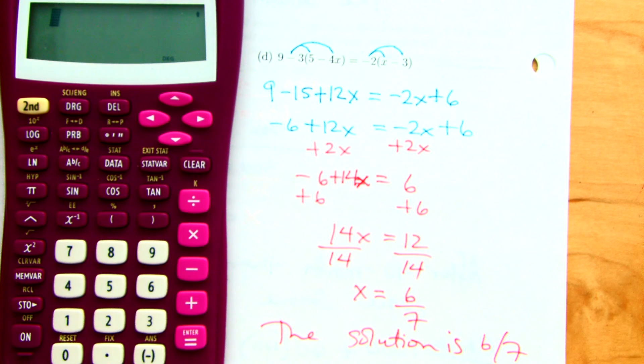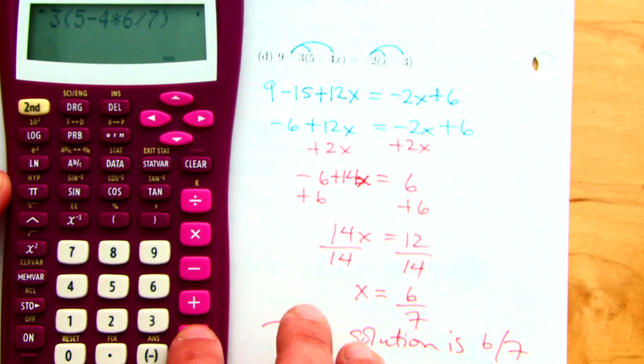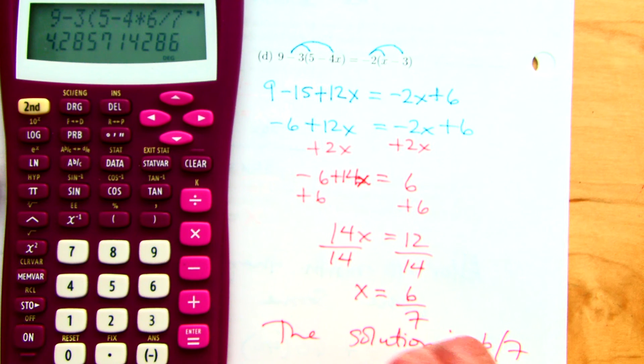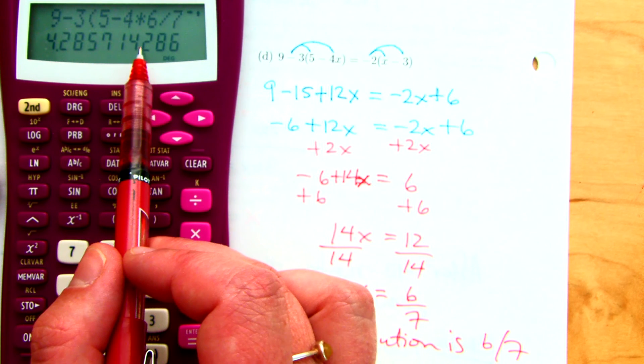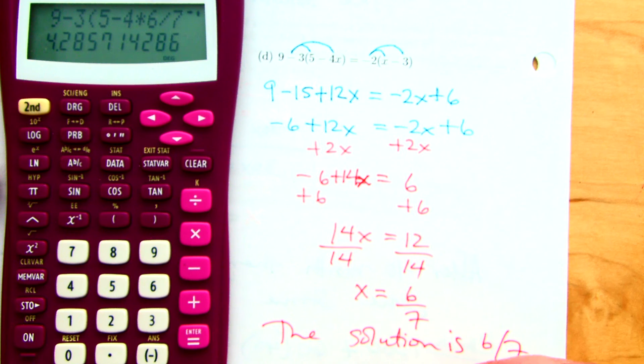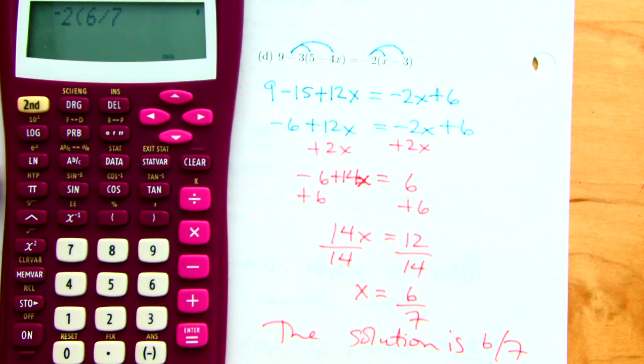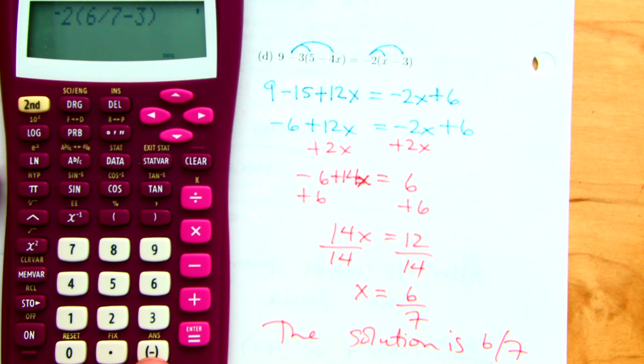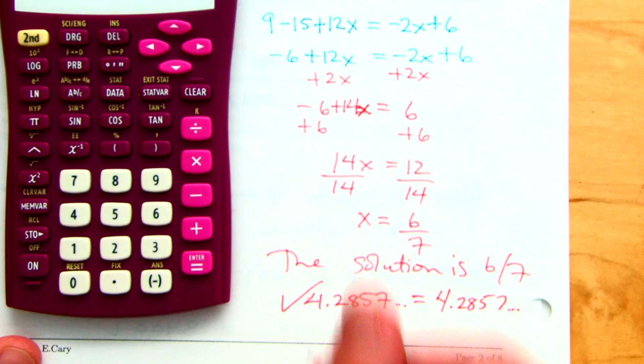And then I'm going to push enter. 9 minus 3 times (5 minus 4 times 6 divided by 7), enter. So my check is going to be 4.2857... Actually, that's where that repeats is all the way, the 5 cents is the repeating decimal. It starts repeating again at here, 2, 8, 6, that's rounded. So is that equal to the other side? Negative 2 times 6 divided by 7 minus 3. And notice I had to use the negative for the negative 2 and the minus for the minus. And that's the same thing, woohoo, 4.2857.